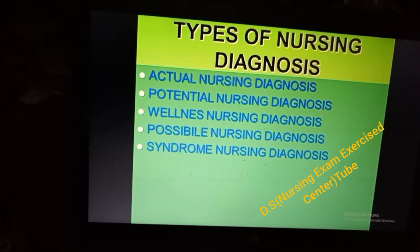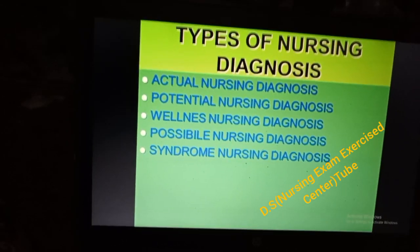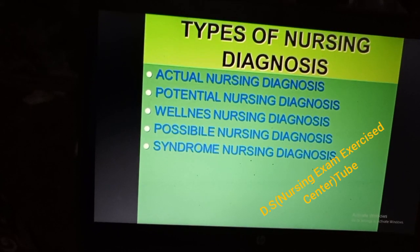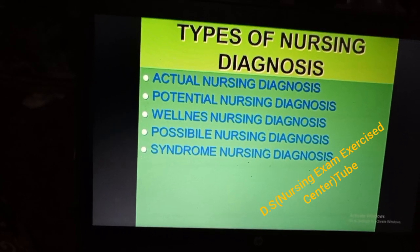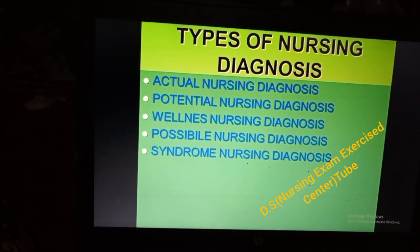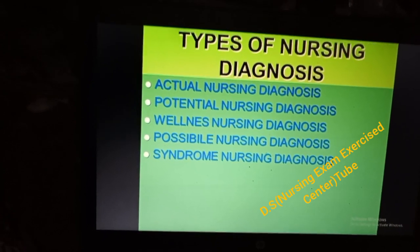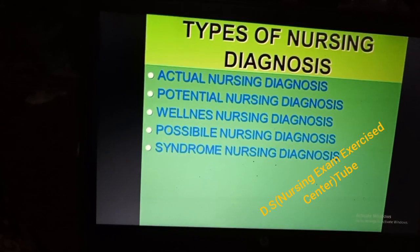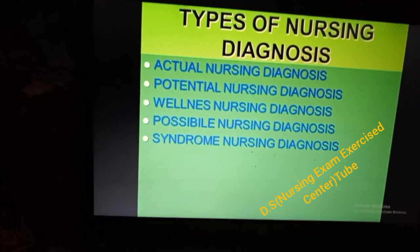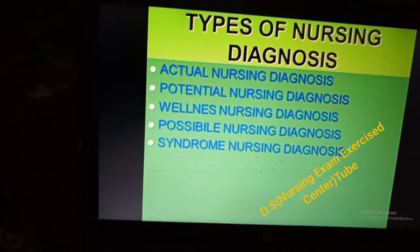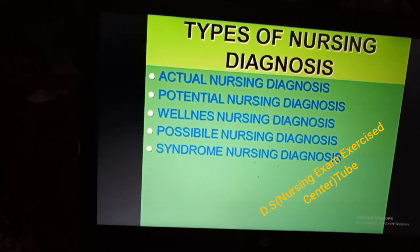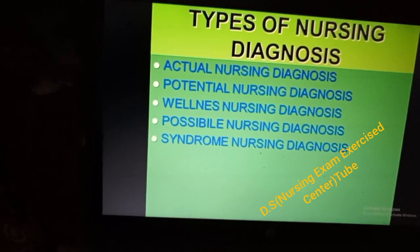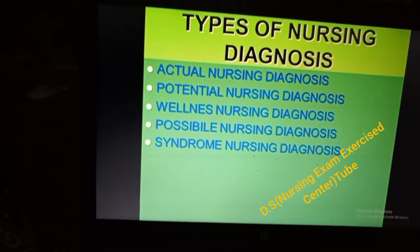Types of Nursing Diagnosis: Actual Nursing Diagnosis, Potential Nursing Diagnosis, Wellness Nursing Diagnosis, Possible Nursing Diagnosis, and Syndrome Nursing Diagnosis — from the five. The two most common are Actual Nursing Diagnosis and Potential Nursing Diagnosis. The most common is Actual Nursing Diagnosis.